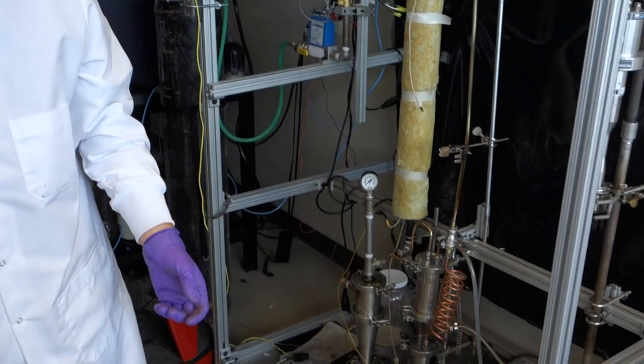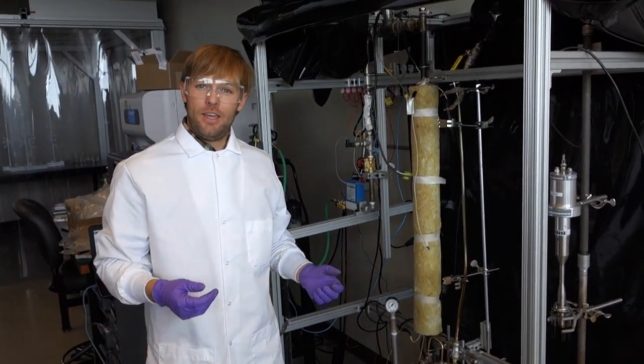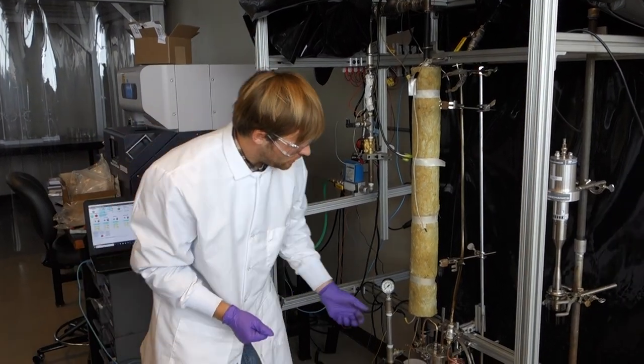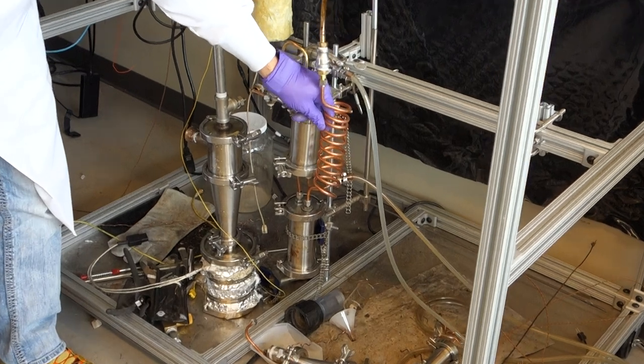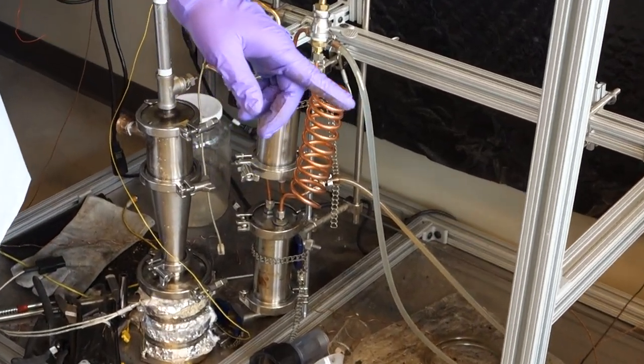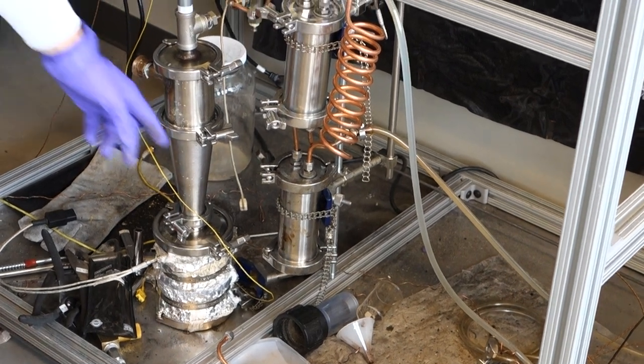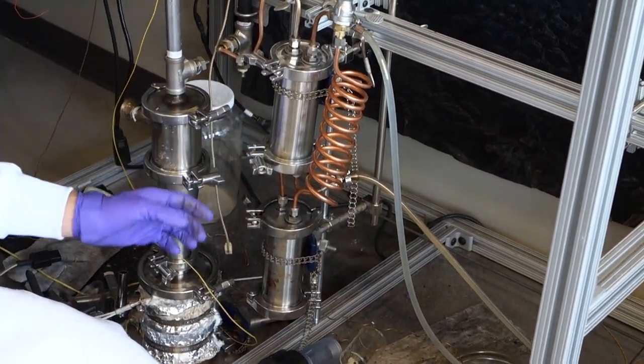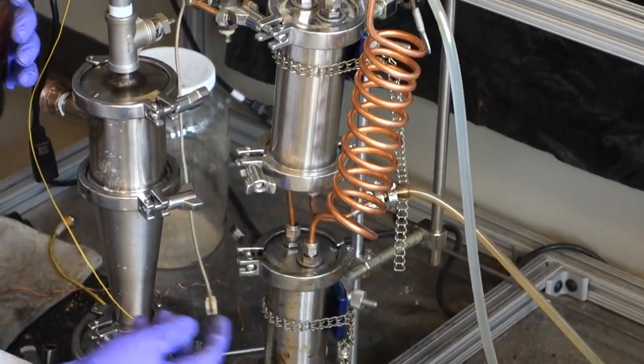It separates the charcoal from syngas and bio-oil vapors. The bio-oil vapors enter this condensation unit here, which is cooled with a chiller, and we collect the oil in this vessel. So this one's cooled, and then the excess oil we collect here.